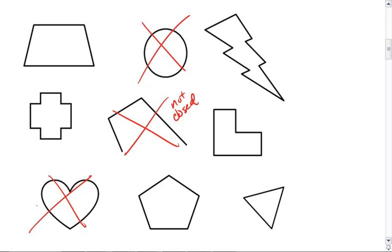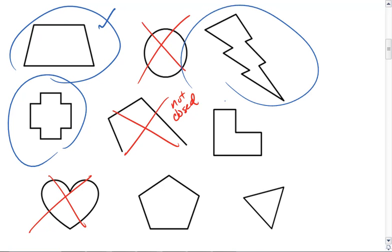Now let's look at what's left. The figure in the upper left, we have four sides because we have four line segments, and each is connected at their endpoints, creating this closed figure. So this is a polygon. The same thing applies to this cross, the lightning bolt, the L, the pentagon, and the triangle.